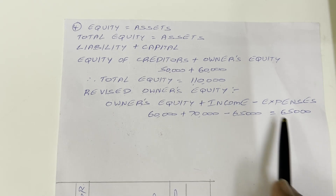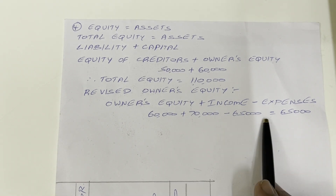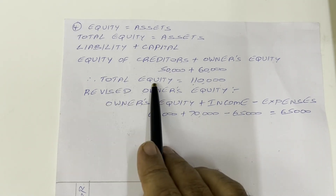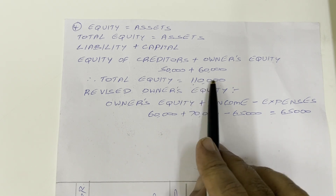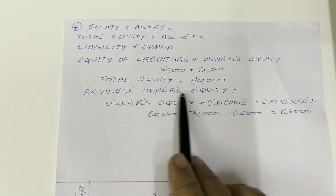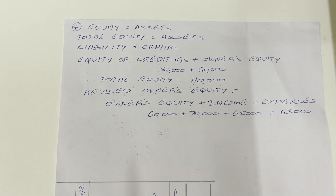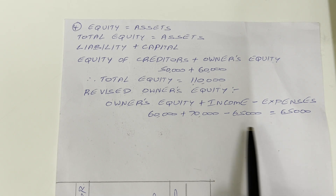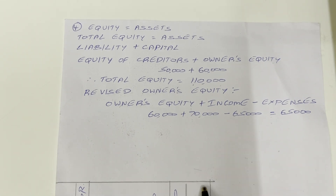Thus, both question answers have been calculated. Total equity is equal to 1,10,000 — that is the first question answer. Revised owner's equity is equal to 65,000 — that is the second question answer. Take a screenshot of this solution. This is the end of the present video. Hope this video is helpful to you. Thank you.